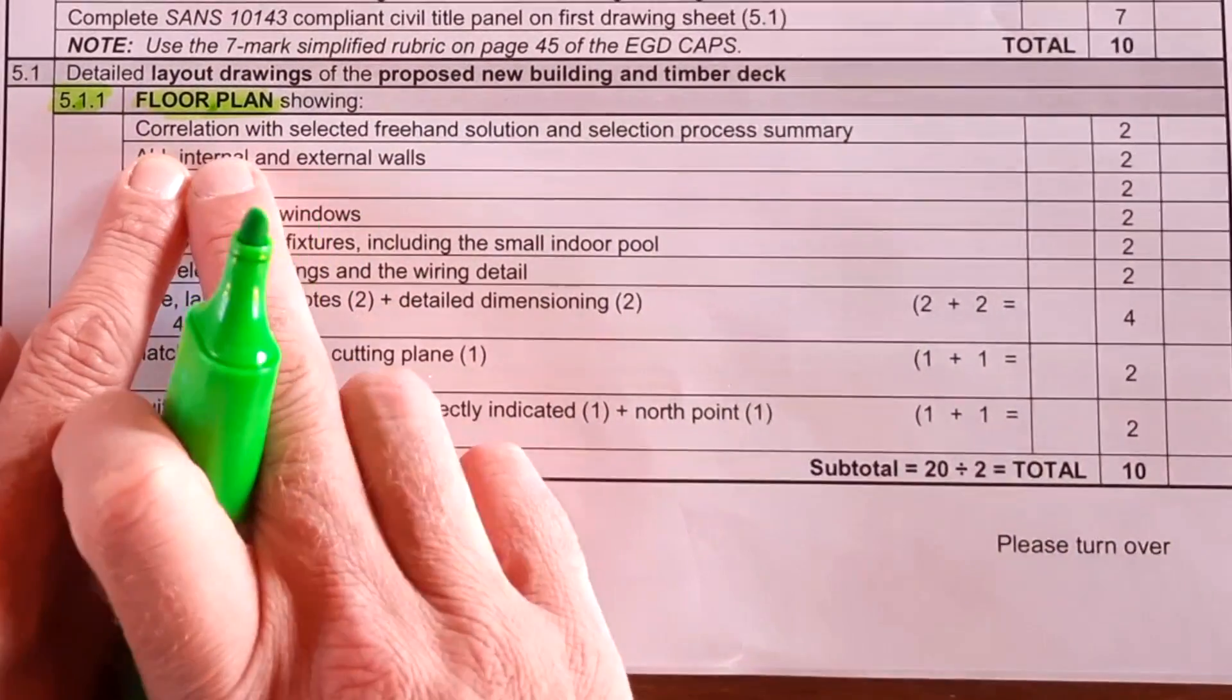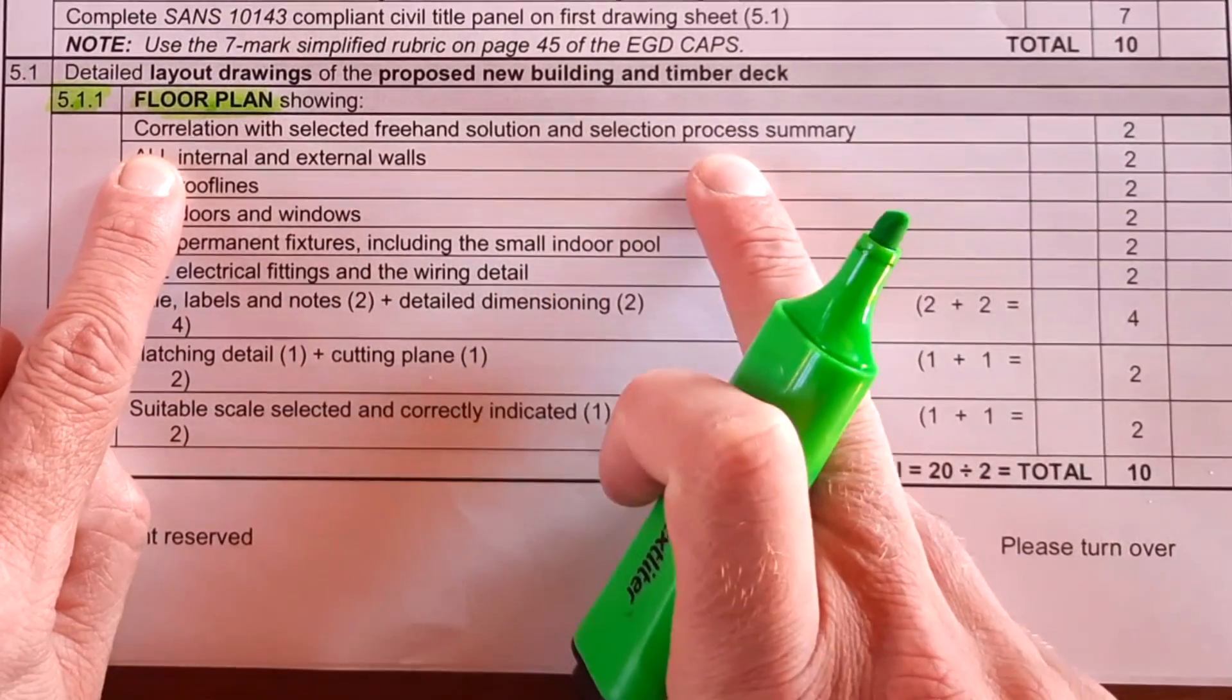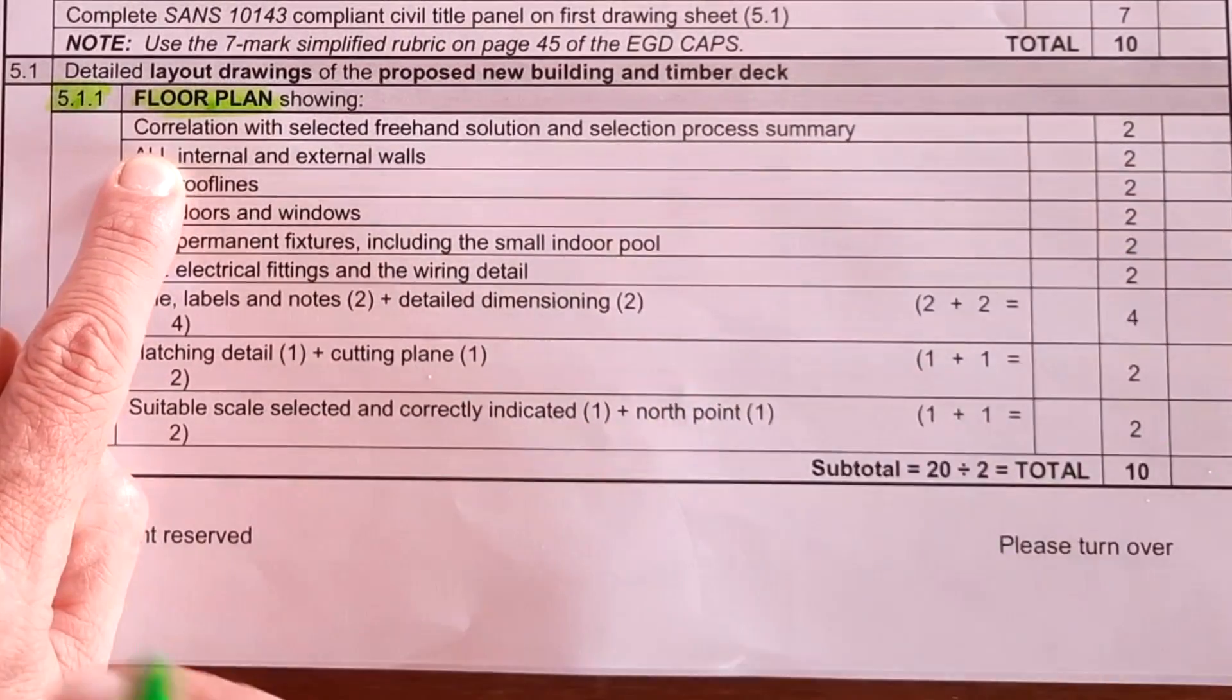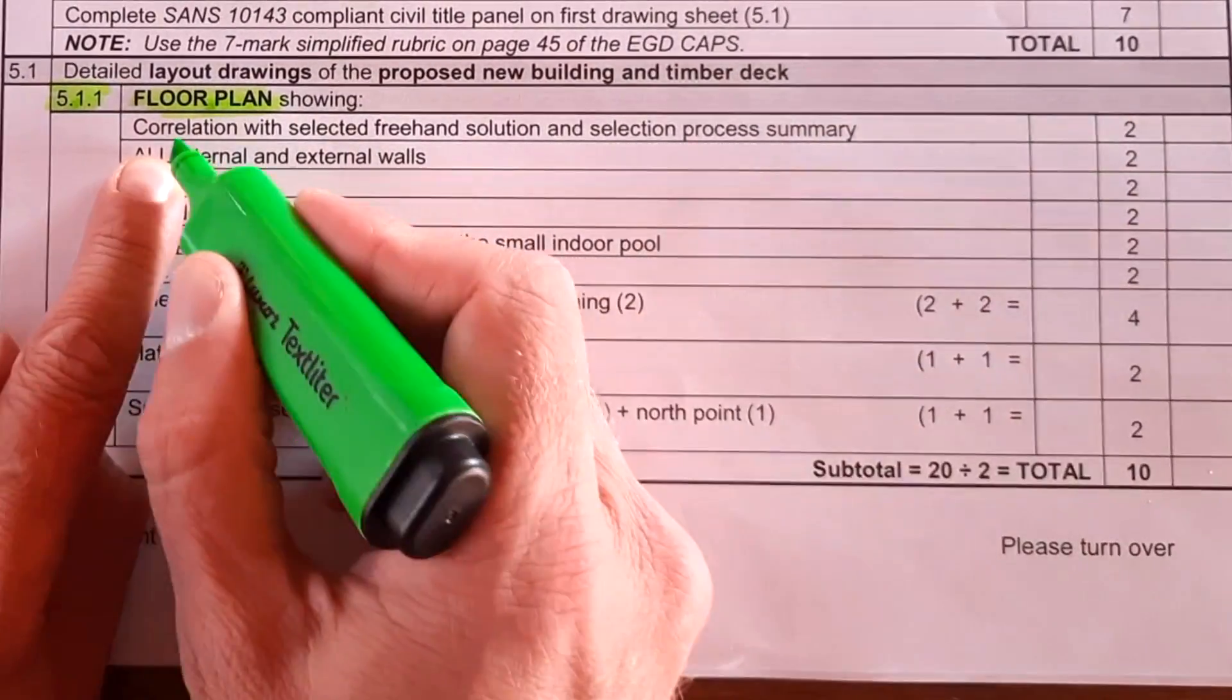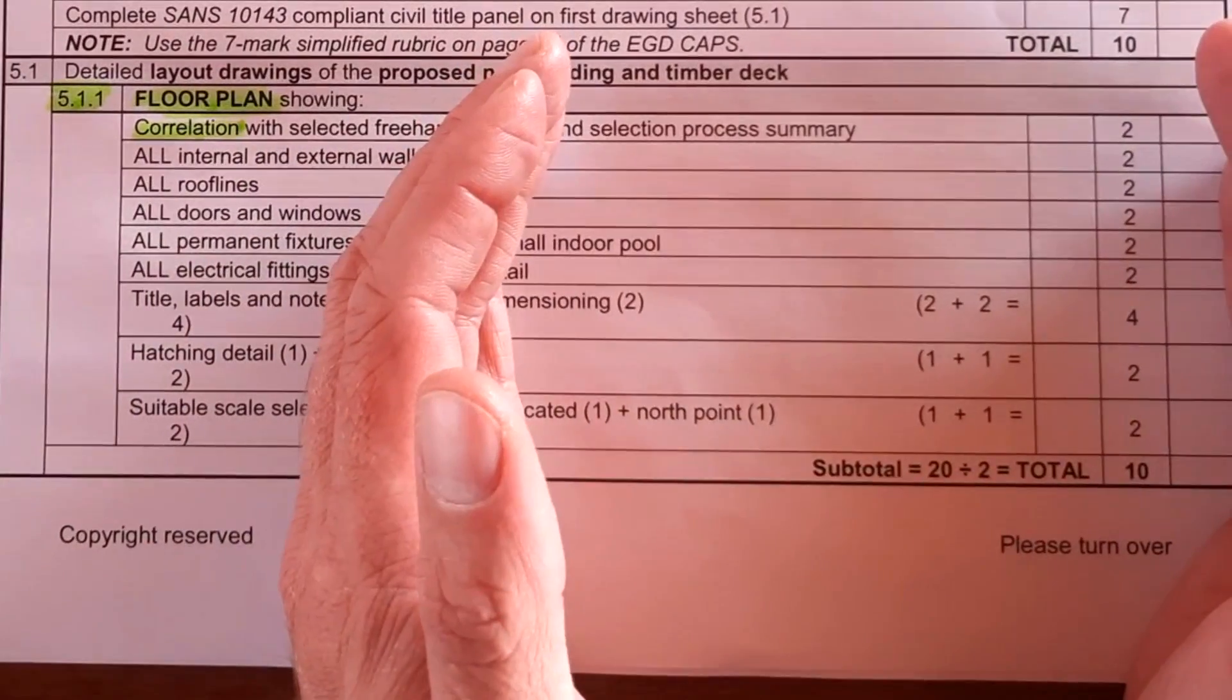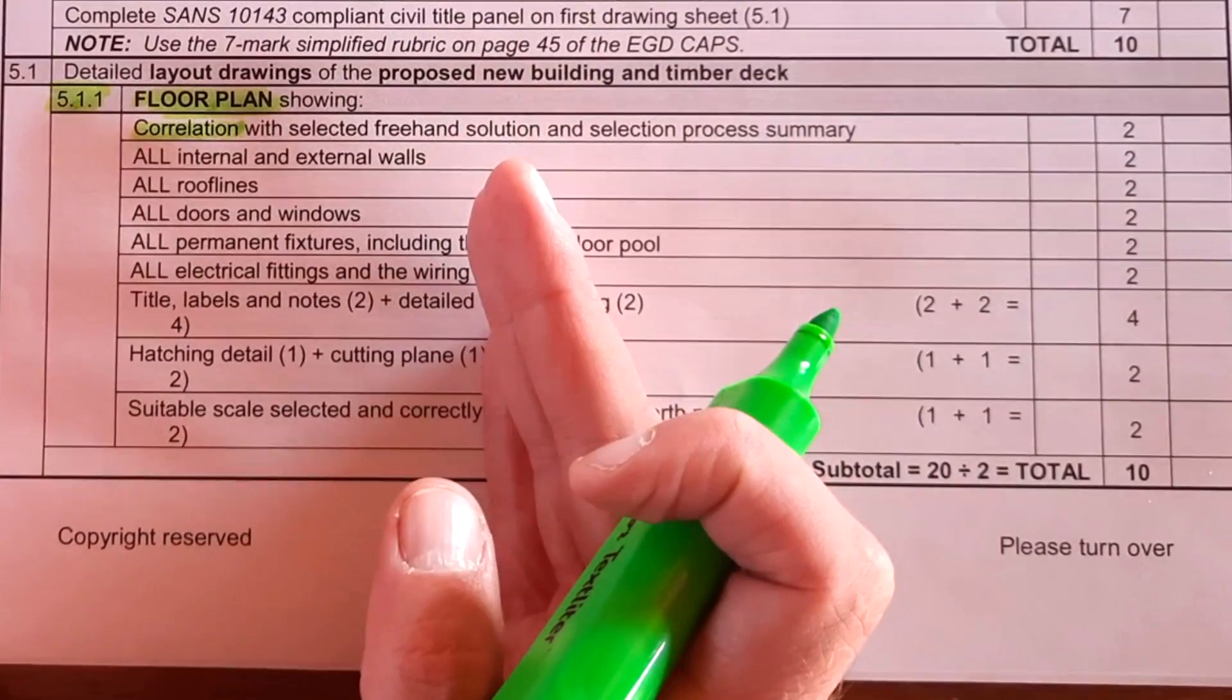Does it correlate with your selected freehand solution and the selection process that you did on the previous page, which we just did in the previous video? So make sure you look at that. But does it correlate? They're going to assess, does your actual final solution look like your final freehand concept proposal.